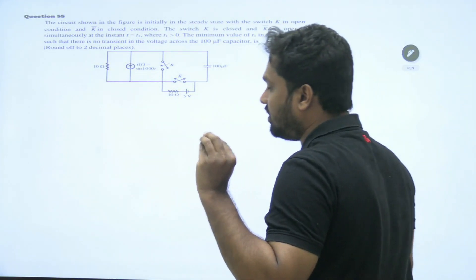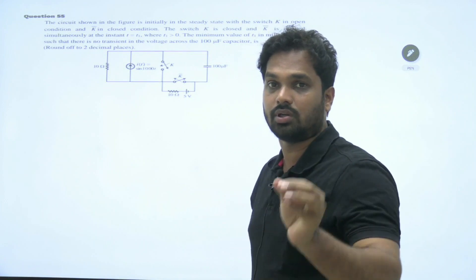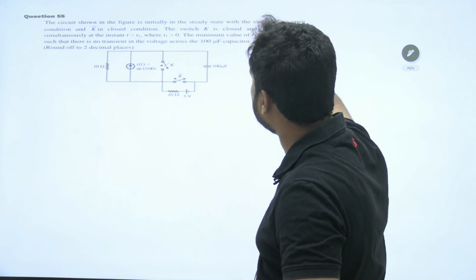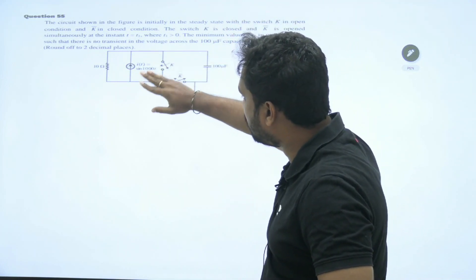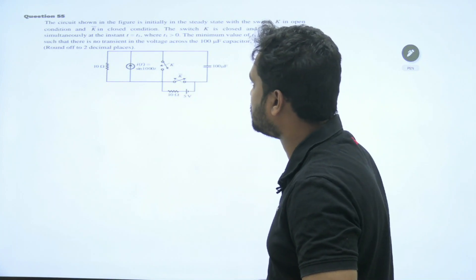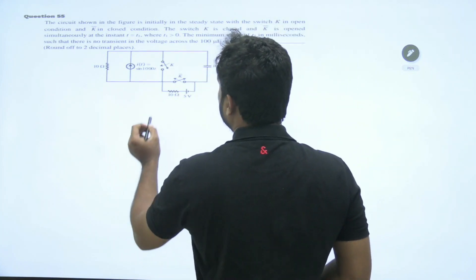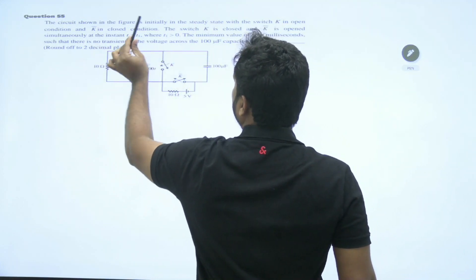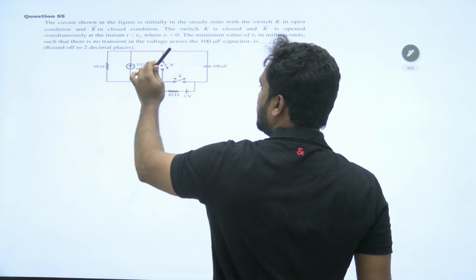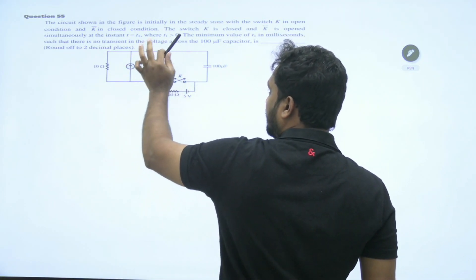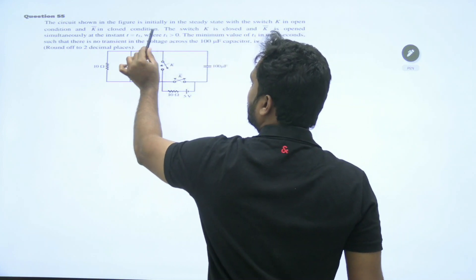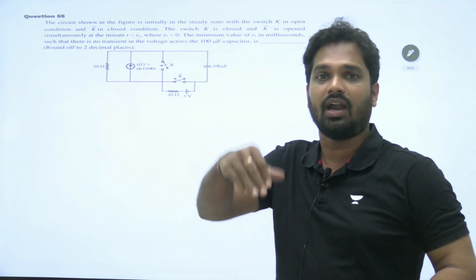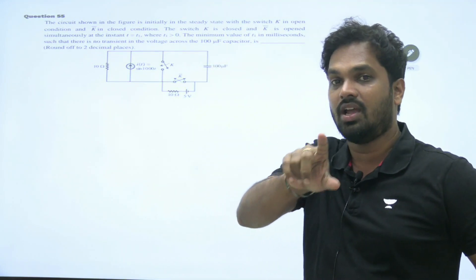Reading the question, understanding the question, common sense makes a lot of sense in this kind of questions. In the circuit shown in the figure, initially in steady state, the switch k is open, k bar is closed. Initially at steady state, k bar is open. Now the switch k is closed and k bar is... initially k open, k bar close, then t equal to t1 which is greater than zero, some value.